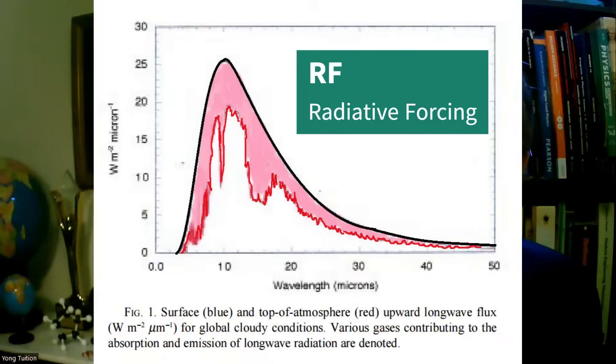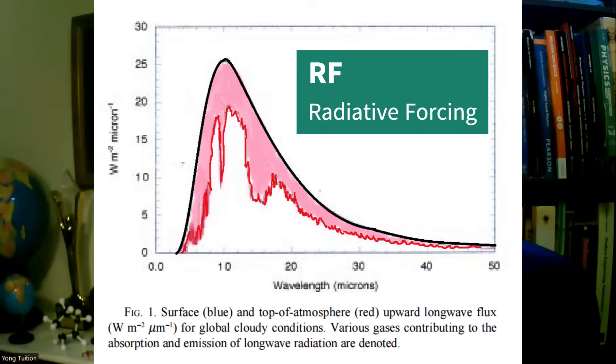Graphically, radiative forcing is the colored area in this diagram. The maximum value of the radiative forcing is 155, equal to 394 minus 239, using the numbers in this talk.